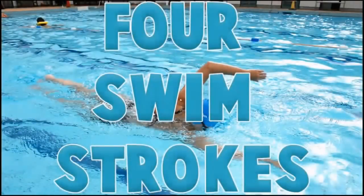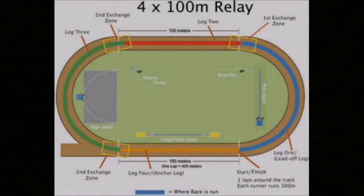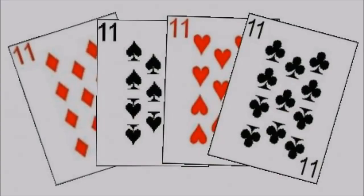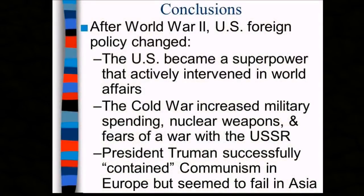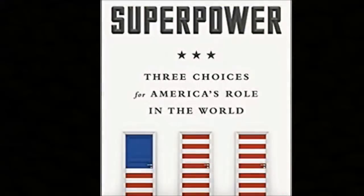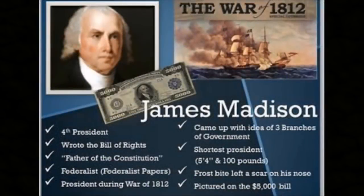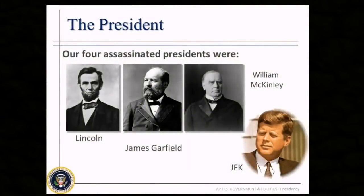What about the four main swimming strokes — breaststroke, backstroke, crawl, and butterfly? Or the four stages of an athletics relay? There are even four suits in a deck of playing cards — hearts, clubs, diamonds, and spades. Did you know that the American Constitution was written during the term of the fourth American president, James Madison? Also, to date, four American presidents have been assassinated: Abraham Lincoln, James A. Garfield, William McKinley, and John F. Kennedy, of course.